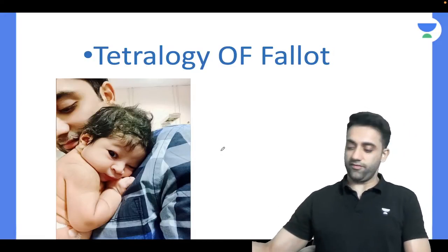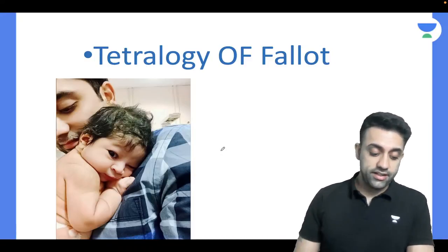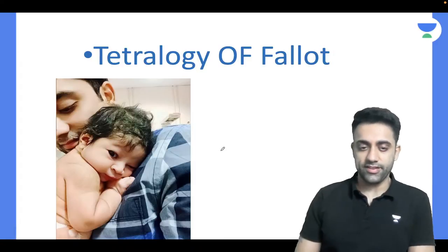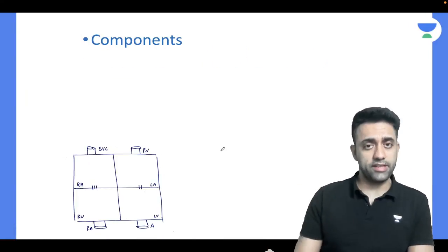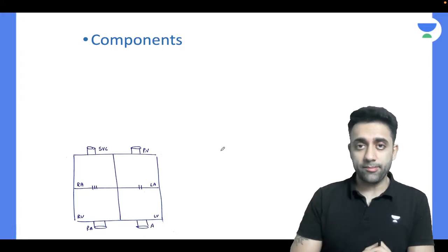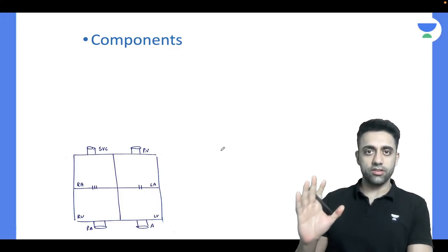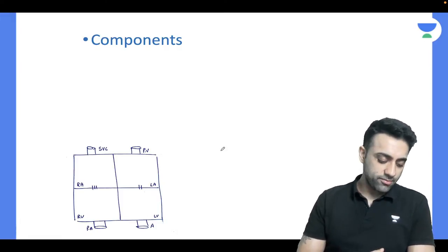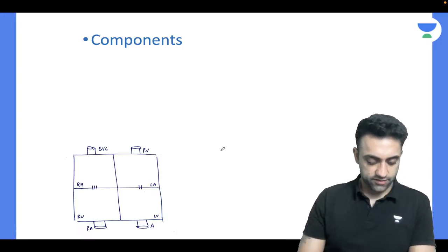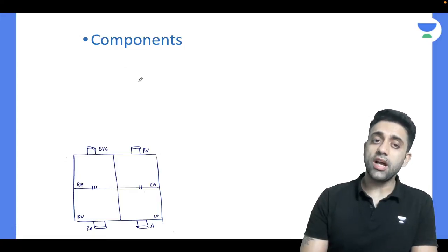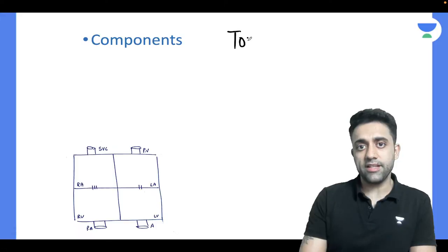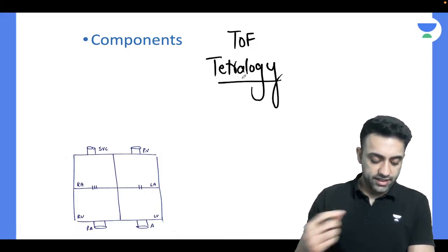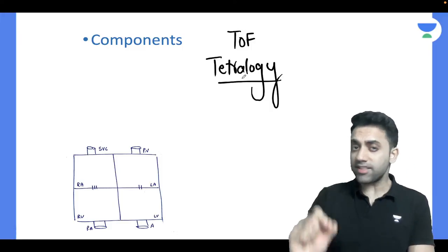Tetralogy of Fallot is one of the most important topics with many exam questions. We are going to unfold this topic in a very different manner. Remember, we say 'Tetralogy' but the real spelling is 'Tetralogy.' This class will be spoken for about 40 minutes, so let's finish this topic.